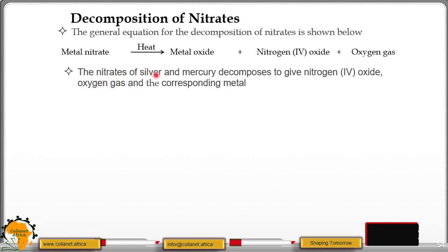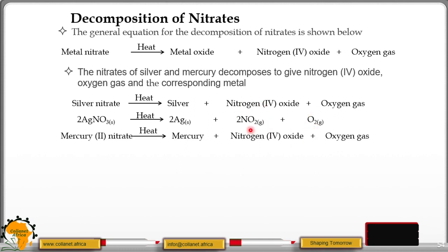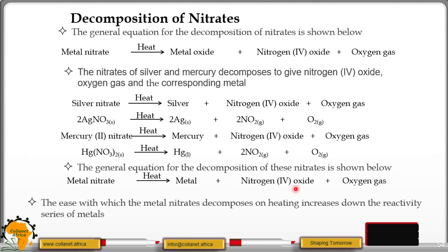The nitrates of silver and mercury decompose to give nitrogen dioxide, oxygen gas, and the corresponding metal — in this case you do not get a metal oxide but the metal or element itself. The equation for decomposition of silver nitrate gives silver metal plus nitrogen dioxide, which is a red-brown gas, and oxygen gas. Mercury(II) nitrate gives mercury metal plus nitrogen dioxide gas plus oxygen gas. The general equation for this type shows: metal nitrate → metal + nitrogen dioxide + oxygen gas.